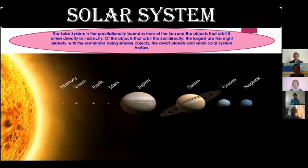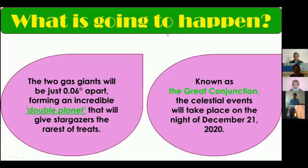What is going to happen in December 2020? In this month, the two gas giants, Jupiter and Saturn, are going to come together. They're going to be just 0.06 degrees apart from each other, and they will look as if they are a double planet. This phenomenon is going to happen on 21st December 2020, and this is called the great conjunction.